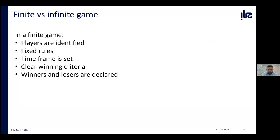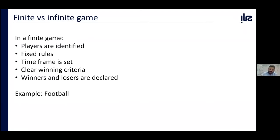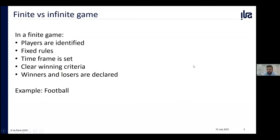An example of a finite game is football. You've probably watched the UEFA Cup recently. Within that tournament, the teams are known, there are rules being followed — if you break the rules you get penalized. The game is set within a timeframe, and the tournament itself has a timeframe. The winning criteria is clear: you score goals, you progress, you get points based on standings, there are knockouts, and at the end there are champions, winners, and losers. The same applies to chess and other games.